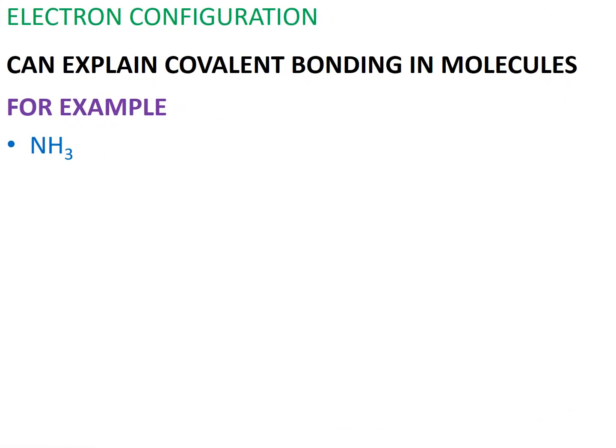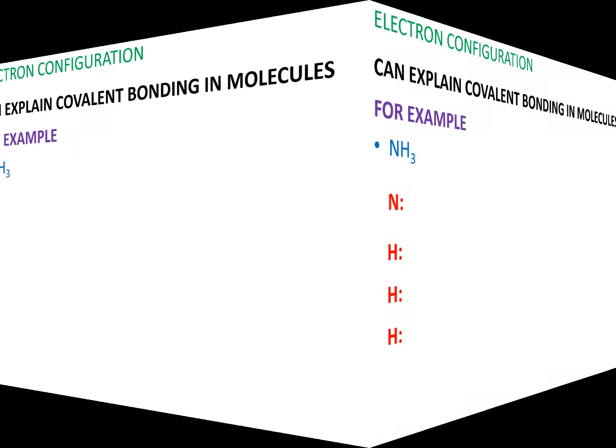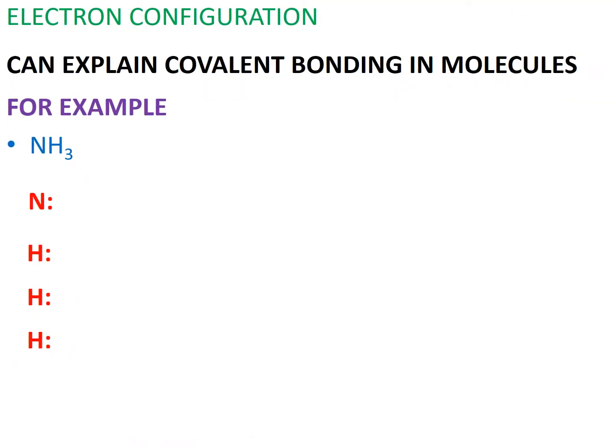The first point we're going to look at is that electron configuration can explain covalent bonding in molecules. The first example we're going to look at is ammonia. Ammonia's chemical formula is NH3, which means one molecule of ammonia is made up of one nitrogen atom and three hydrogen atoms covalently bonded together.